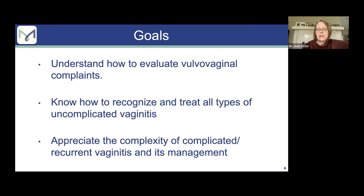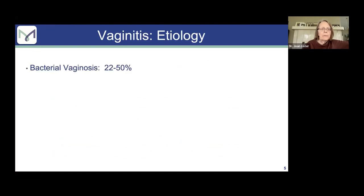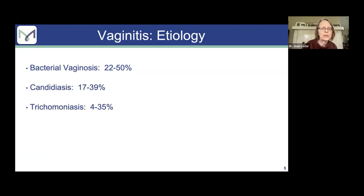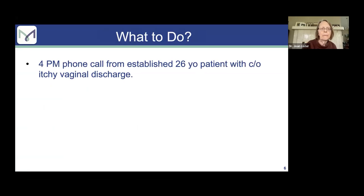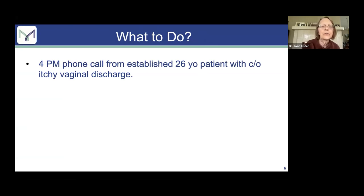I understand you have a great protocol for looking through a microscope when evaluating people with vaginitis, and I think that's great, so I did include a few slides like that. Vaginitis — what causes it? Bacterial vaginosis is the most common. We all think of yeast, but the most common is bacterial vaginosis, then yeast, then trichomoniasis, and then other things which cause itching, burning, and discharge.